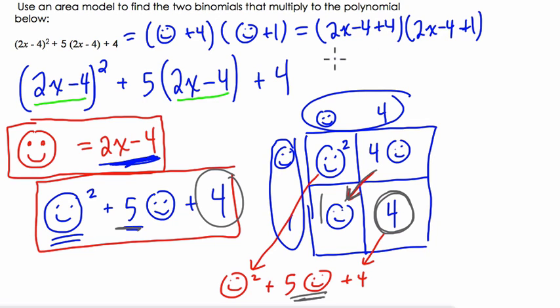Now, negative 4 plus 4 is 0, so it's 2x. And then, 2x minus 4 plus 1 is negative 3x. 2x minus 3, excuse me. So, this could be our answer.